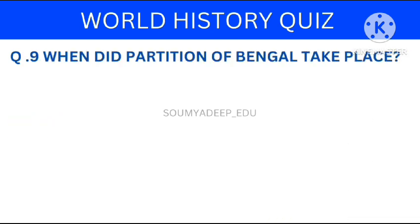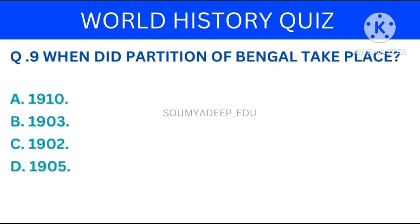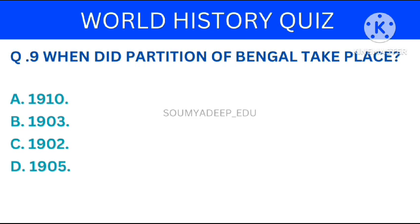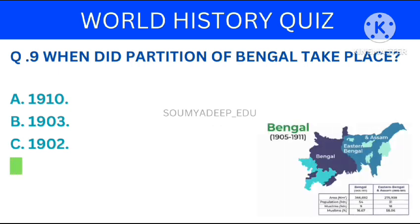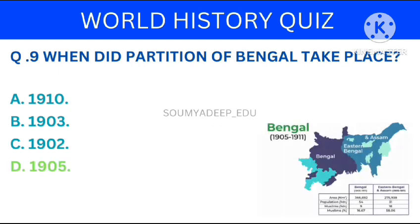So let's move to the next question. When did the Partition of Bengal take place? The options are: 1910, 1923, 1922, 1925. Your time starts now. The answer is 1925.